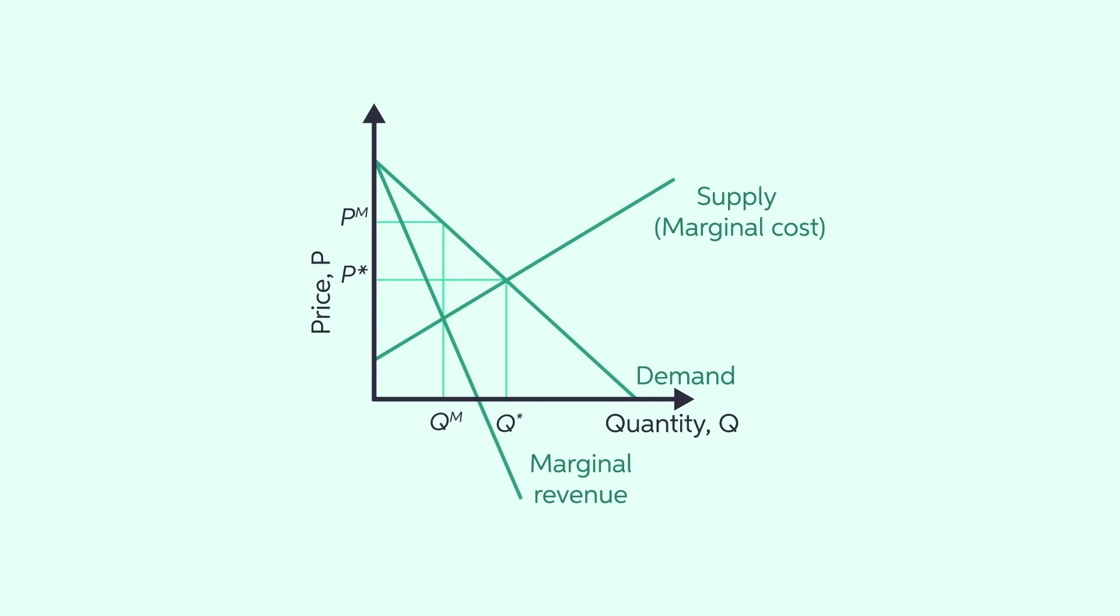The consumer surplus, which is the amount a buyer is willing to pay for a good minus the amount the buyer actually pays for it, is equal to area C plus B plus E under perfect competition, the orange shaded area. It shrinks substantially under a monopoly, all the way to area C.